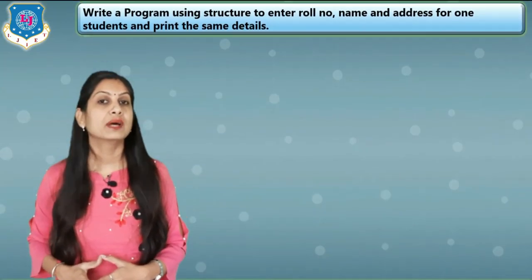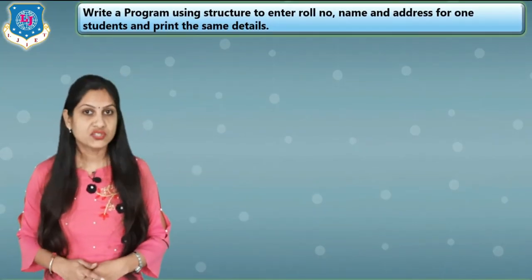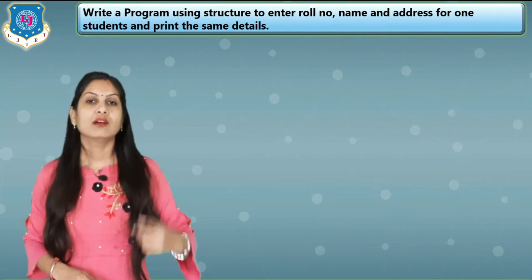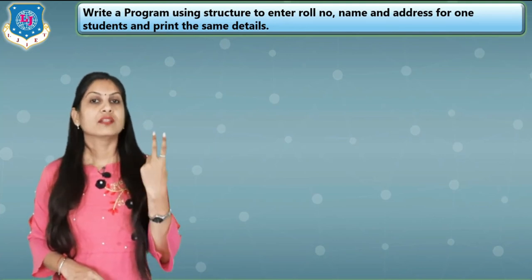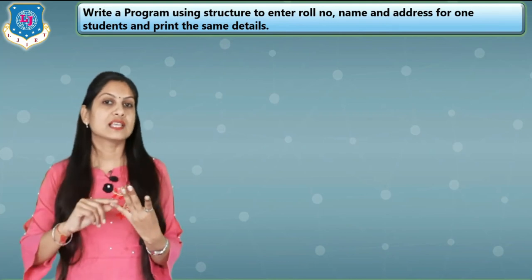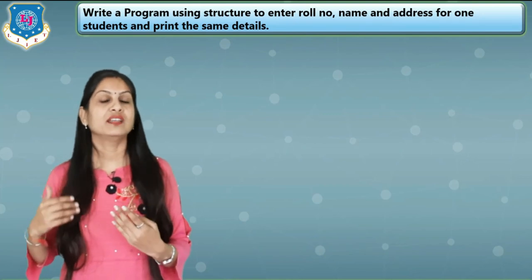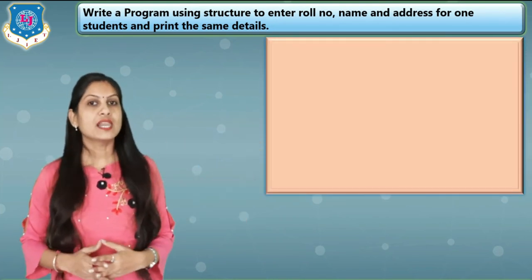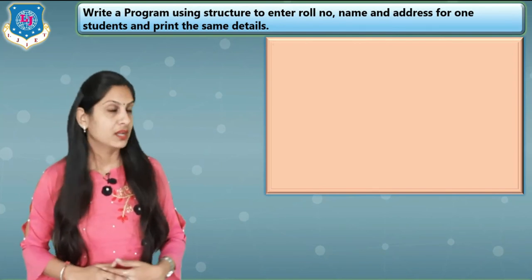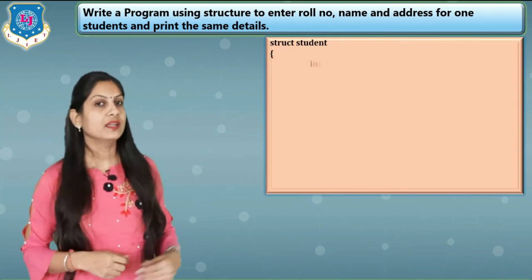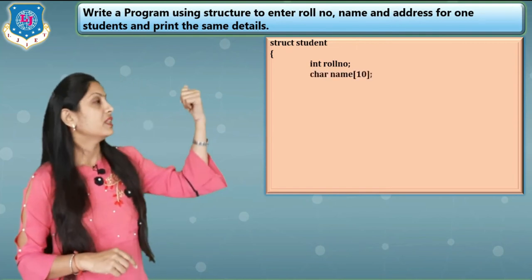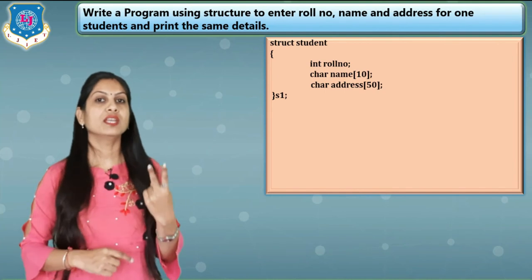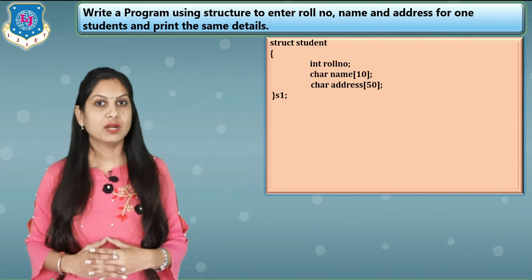Let's see a simple example: write a program using structure to enter the role number, name, and address for a single student and print the same details. The four steps are: first, define the structure; second, declare the variable; third, access the member using the dot operator; and fourth, initialize the value. Always start by including the header file, then define the structure before void main. Here I am writing struct student with three members: role number, name, and address. Using Method 1, we declare variable s1 for a single student.